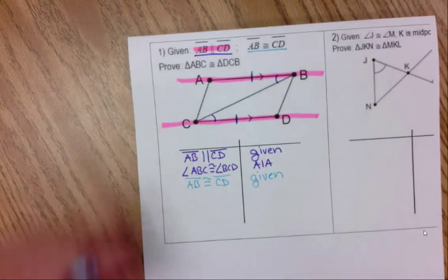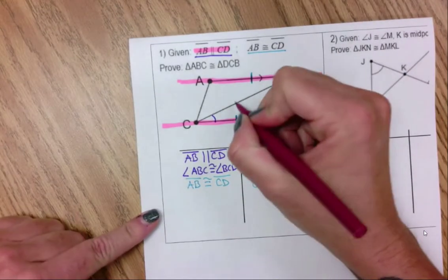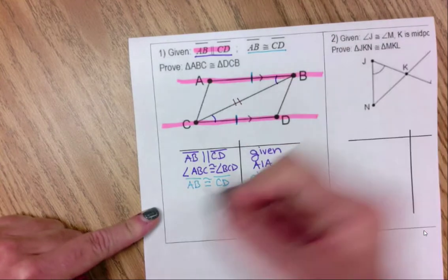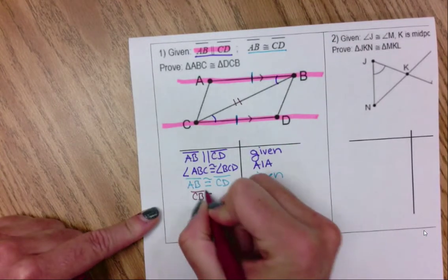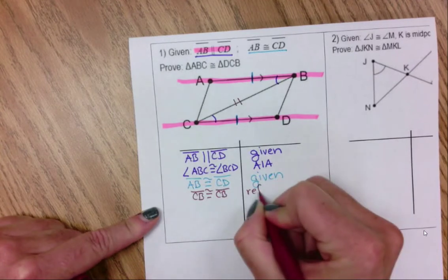The last thing I'm going to conclude from this diagram is that CB is congruent to itself, CB. And this is because of reflexive property.